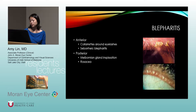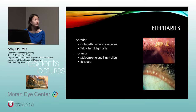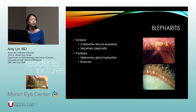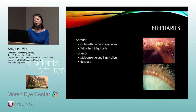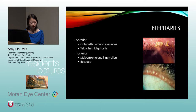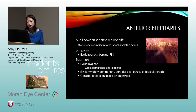Starting with blepharitis, there are basically two main types: anterior and posterior. Anterior blepharitis is at the lash line — you see collarettes around the eyelashes — also called seborrheic blepharitis. Posterior blepharitis is posterior to the lashes, involving the meibomian glands, with meibomian gland plugging or inspissation. Rosacea is a common cause of posterior blepharitis.